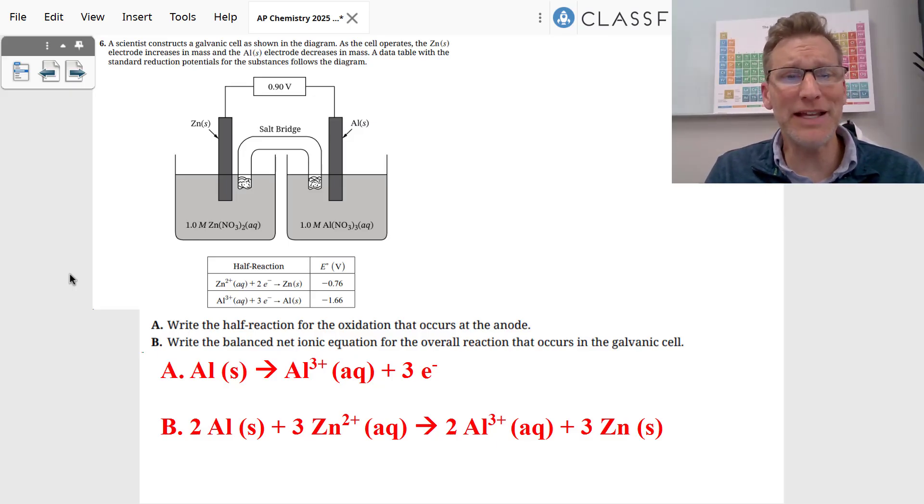We wanted to write the half reaction for the oxidation that occurs at the anode. Which reaction are we going to flip for this overall reaction? We're going to flip the aluminum reaction. So you needed to write the aluminum reaction for that half reaction that occurs at the anode. The zinc is going to be the cathode.